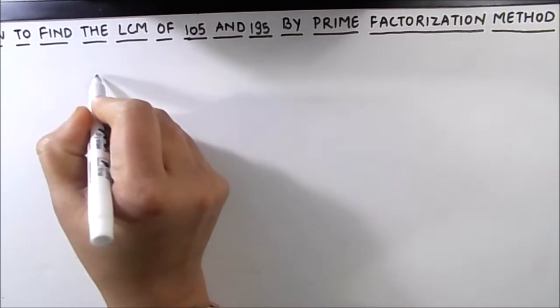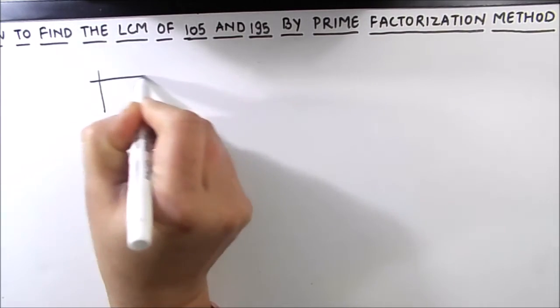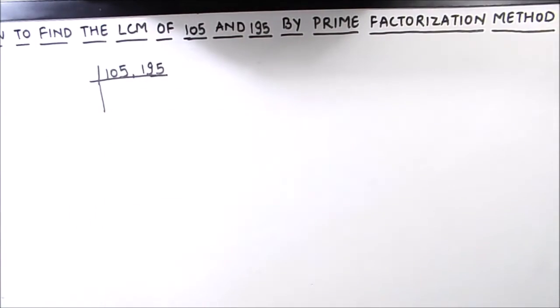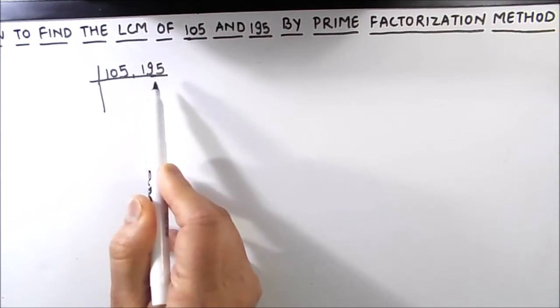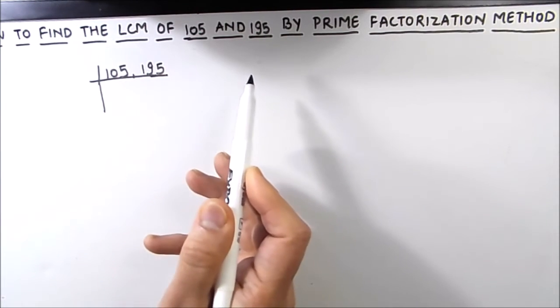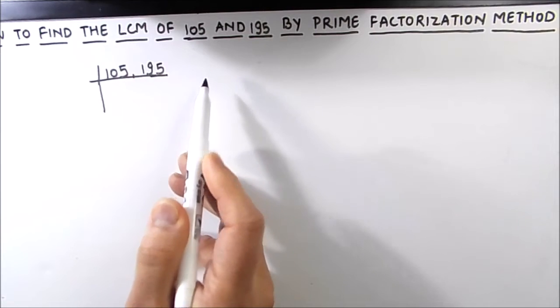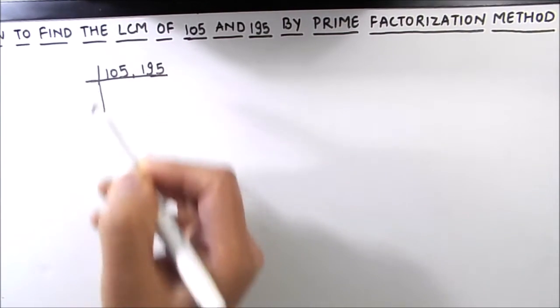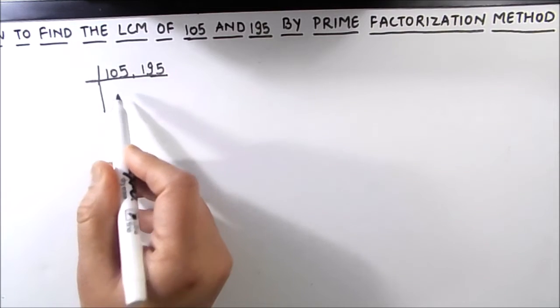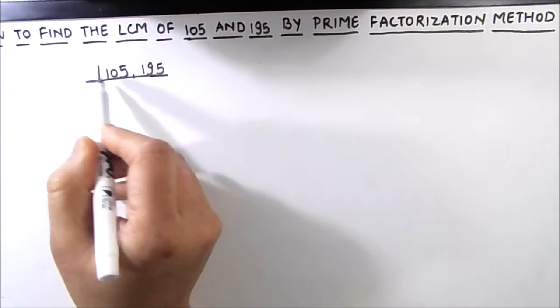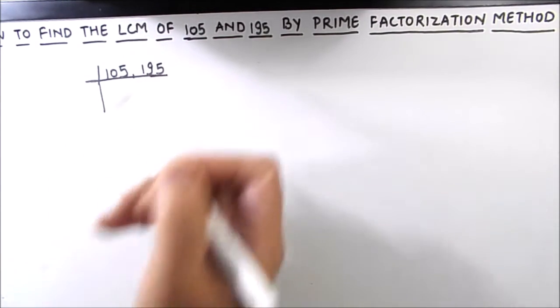So let's start by dividing the two numbers by prime numbers. We are going to divide the two numbers together in the same ladder. We can find the factors of the two numbers separately too and find the LCM by taking the common and uncommon factors, but here we are going to use the easiest method which is dividing the numbers together in the same ladder.